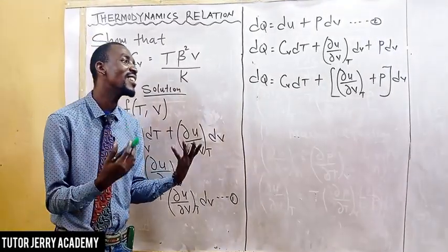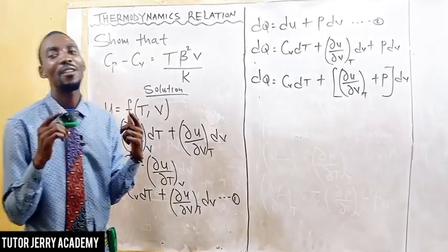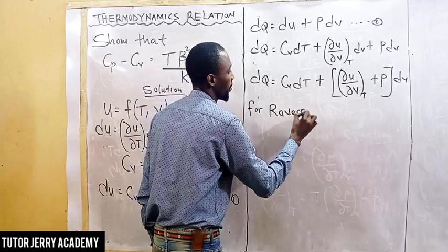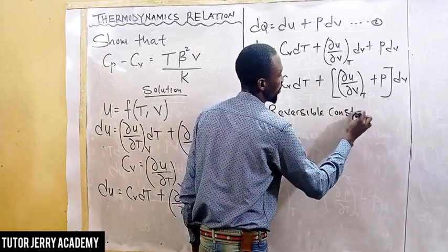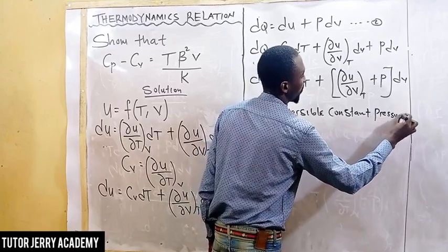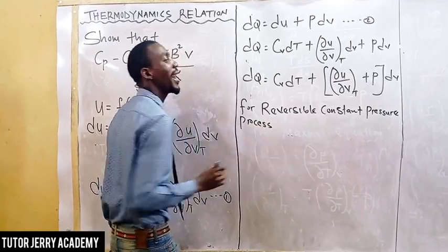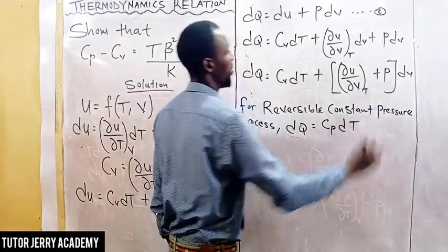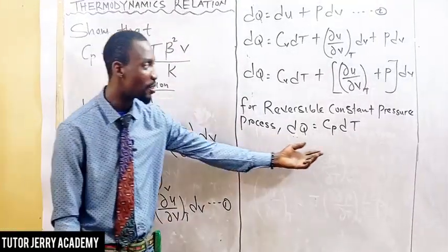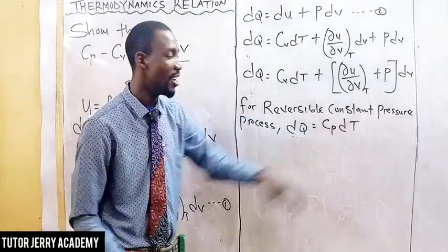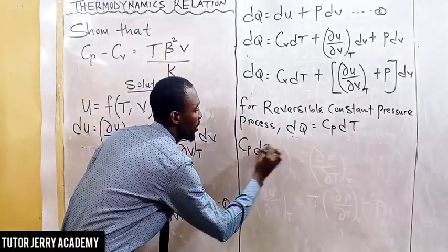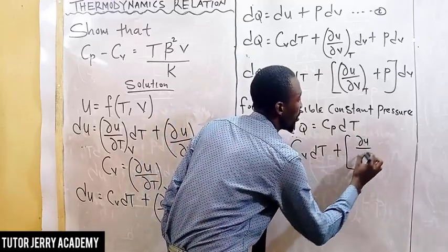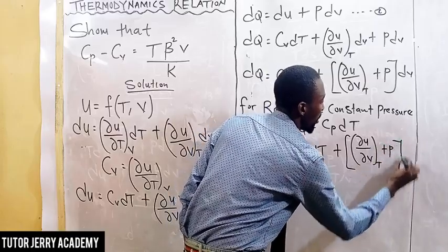For a reversible constant pressure process, dQ equals Cp dT. So substituting, we say Cp dT equals Cv dT plus the partial derivative of u with respect to V, keeping T constant, plus P, multiplied by dV.